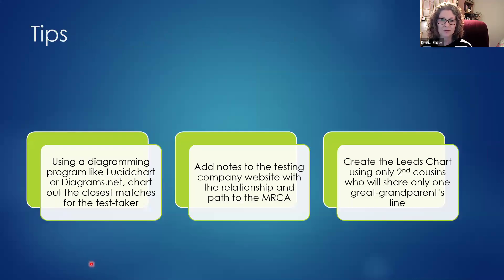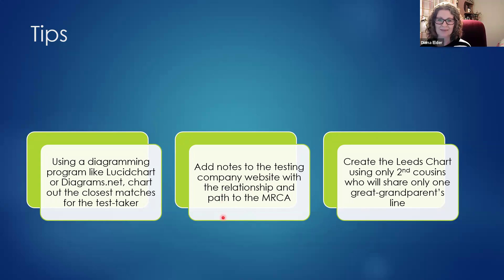To summarize the tips: use a diagramming program like Lucidchart or diagrams.net to chart out the closest matches. Add notes on the testing company website so you don't forget, and make sure you record the relationships — first cousins once removed, twice removed, three times removed. Then you'll be set to create your Leeds chart with only second cousins, who share only one great-grandparent line instead of causing the overlap we saw earlier.